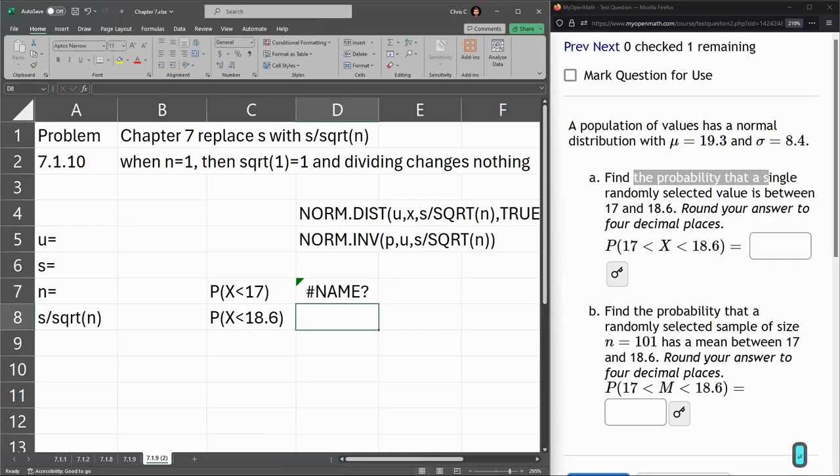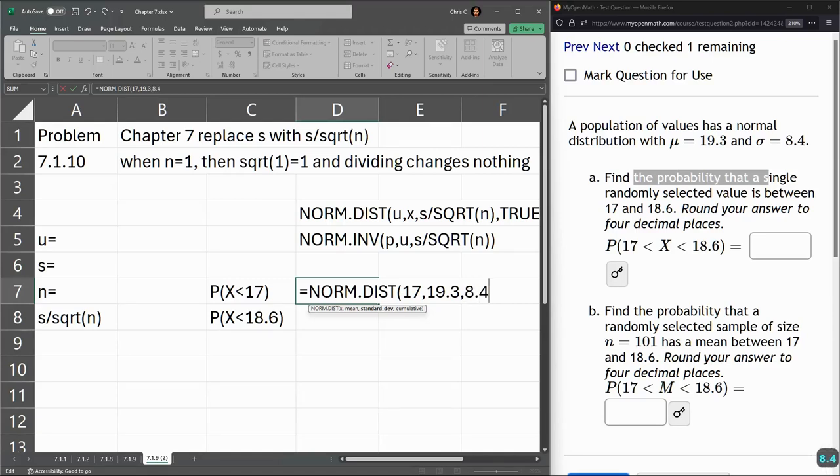So this is normal distribution. Hit the tab key, not the enter key. So NORM.DIST. We have everything we need here. Our X value, this is the 17. Mu, the average, 19.3. Standard deviation, that's the sigma or the S, 8.4 divided by square root of 1 and true.